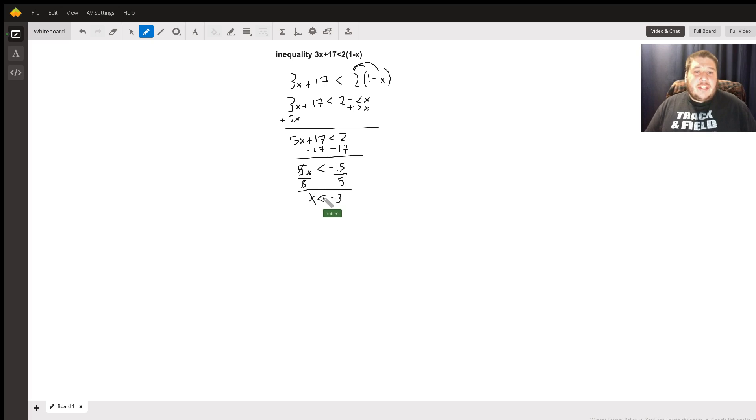However, I like to check our answers before I call this question complete, because I may have done something wrong. Let's find out by picking a number less than negative 3. Let's pick negative 4. I'm going to plug in negative 4 everywhere I see an x. So I have 3 times negative 4 plus 17 is going to be less than 2 times 1 minus a negative 4.